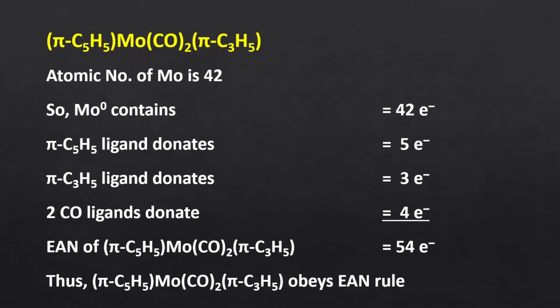In this complex, the atomic number of molybdenum is 42 and there is no charge on the complex, so the oxidation state of molybdenum is 0. Molybdenum will contribute 42 electrons. Thus, 4 electrons from 2 carbonyl ligands, 3 from pi-allyl, and 5 from pi-cyclopentadienyl. Consequently, the effective atomic number of this complex is 54, and it is also following the effective atomic number rule and is stable.